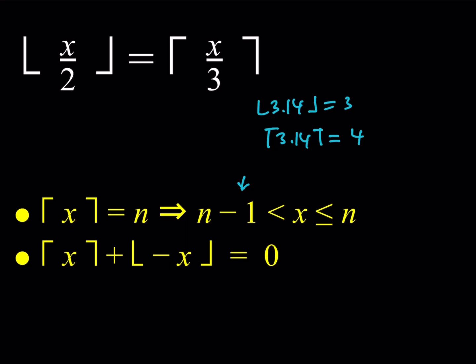For example, take 3.14. If you take the opposite, that's negative 3.14, and its floor value is negative 4 because you're rounding down. And the ceiling value of 3.14 is 4, and their sum is always 0.